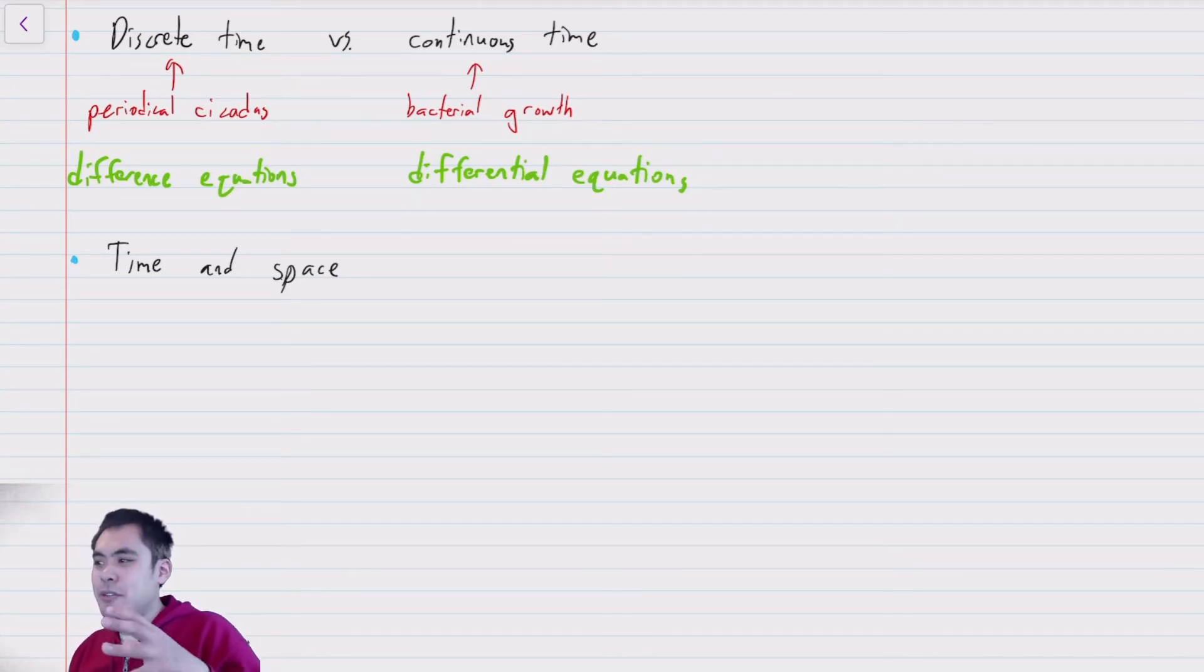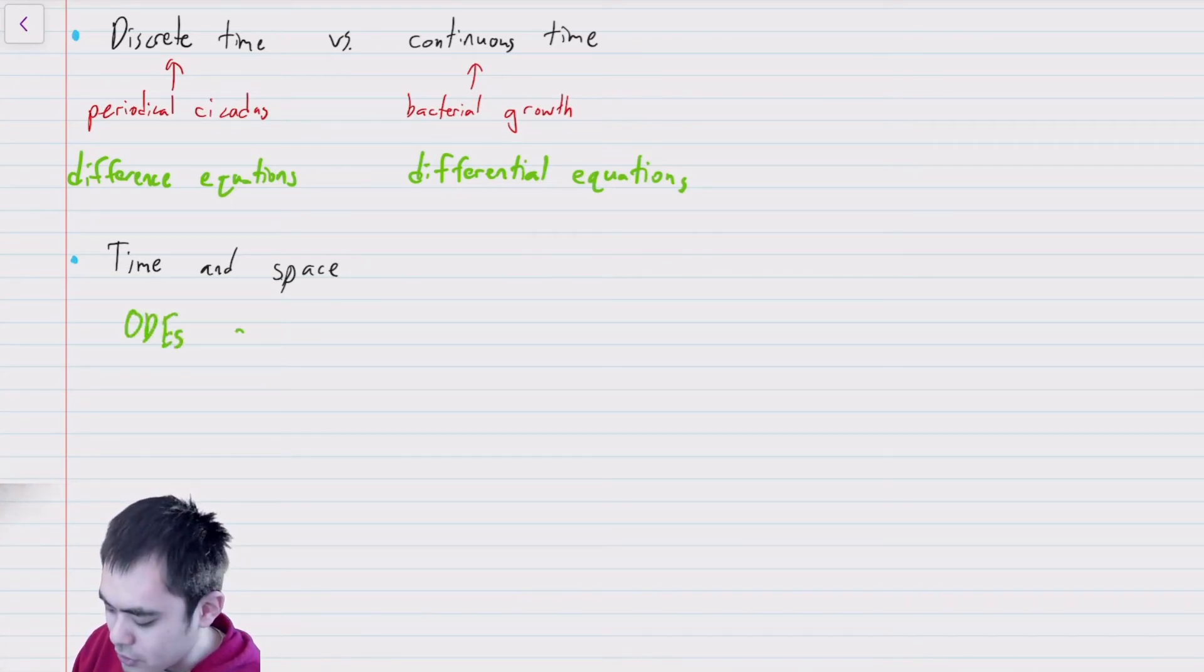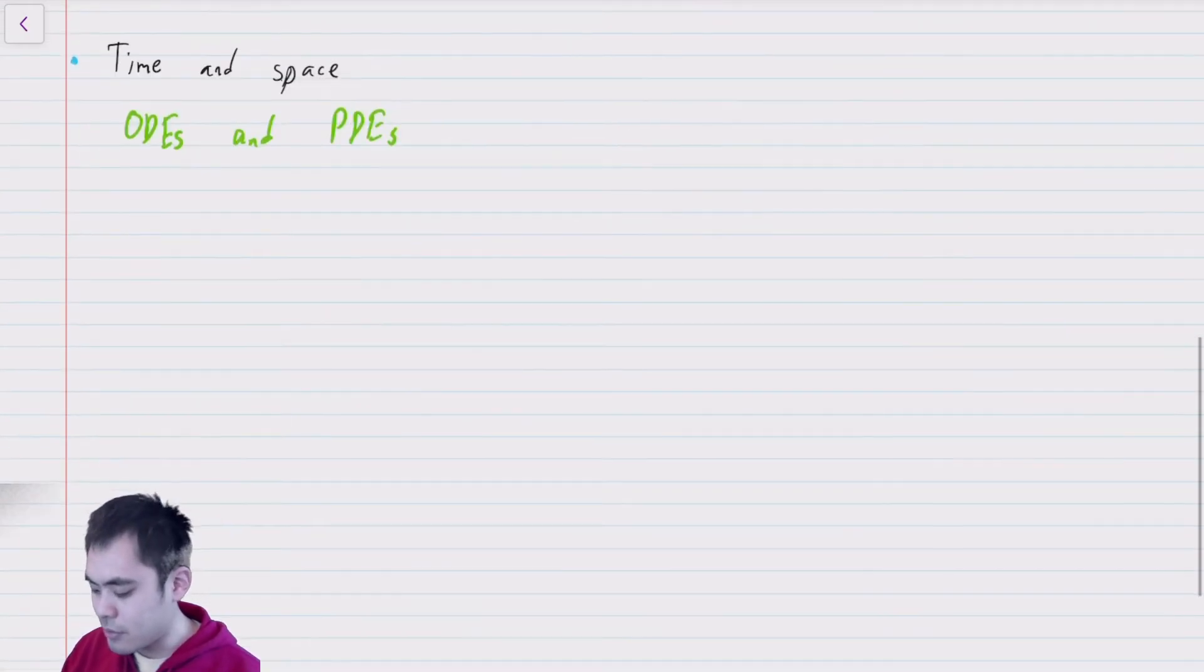All right, so now in the simplest case of dependence only on a single variable of time, we can use what are called ordinary difference or ordinary differential equations. If we have dependence on space or some other variable in addition to time, we might want to consider how system dynamics changes with respect to any one of these factors. Maybe you're going to fix the time and just walk along the coast and see how the water level changes across the coast. And so now this necessitates partial difference or partial differential equations. So this is a different distinction between ODEs and PDEs. Let me draw out some of this classification quickly.